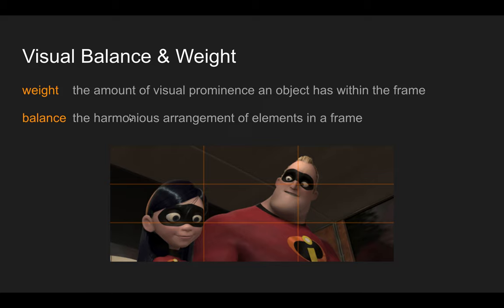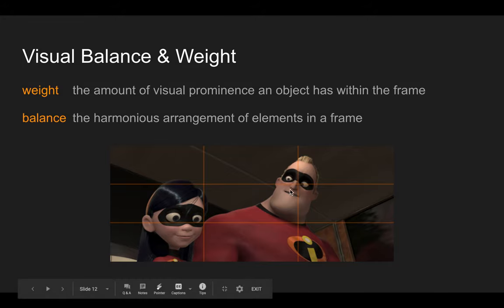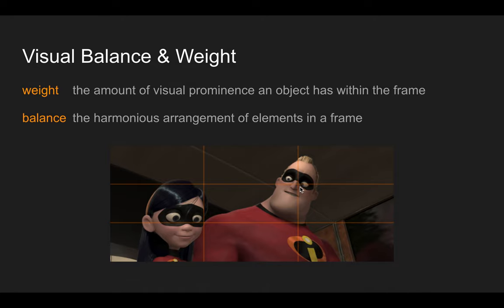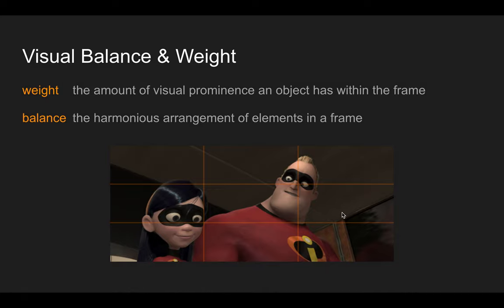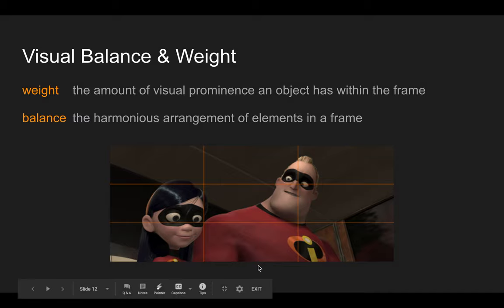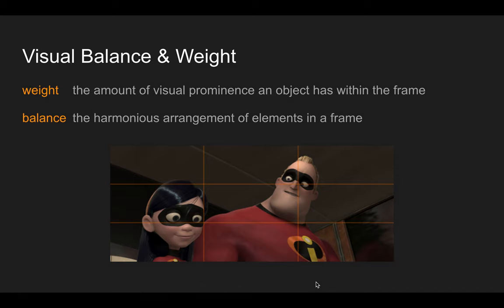Balance can generally be defined as the harmonious arrangement of elements in a frame. In terms of the rule of thirds, if you've got an object on the right third, you can balance it out with something on the left. If there's a focal point in the upper right — as with Mr. Incredible — you could balance that with something in the upper left, as with his daughter. Balance can work directionally: vertically, horizontally, diagonally, and so forth.